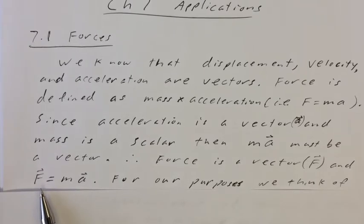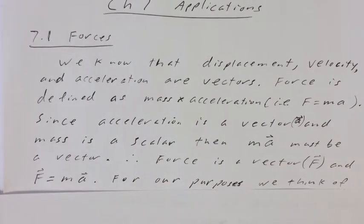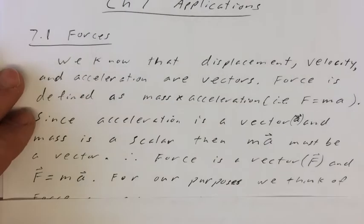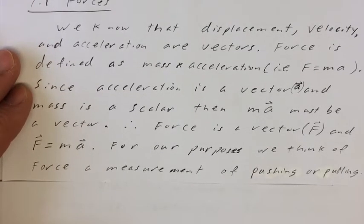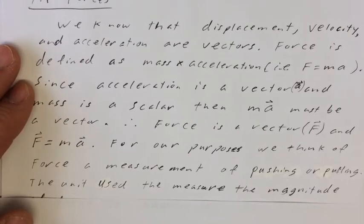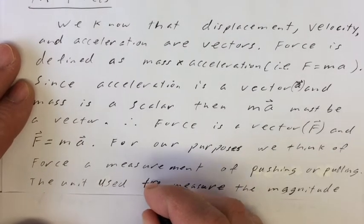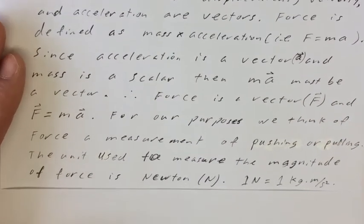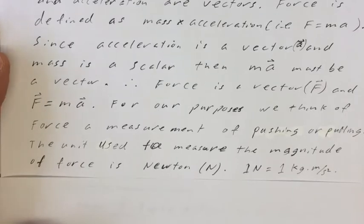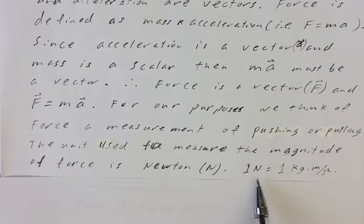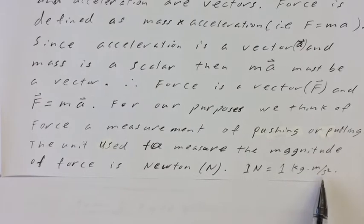The vector signs go over top of F and A, but not over M, because mass is just a scalar — mass doesn't have a direction. For our purposes, we think of force as a measurement of pushing or pulling. The unit used to measure the magnitude of force is a newton, represented as N. One newton is equal to one kilogram times meters per second squared — kilogram is the mass unit, meters per second squared is the acceleration unit.